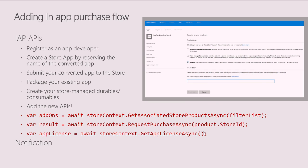Before writing new code for the in-app purchase flow, an important note: you have to register as a developer in the Dev Center if you haven't done so already, package your app as an APPX, and submit it to the Windows Store. Then you can go ahead and add an in-app purchase flow.